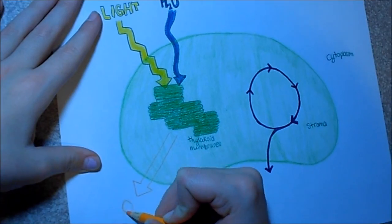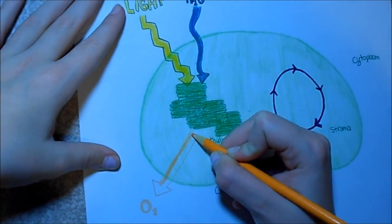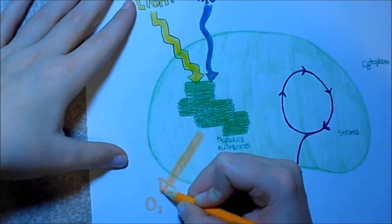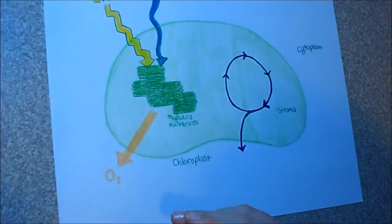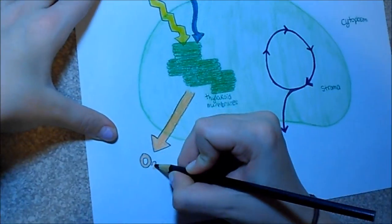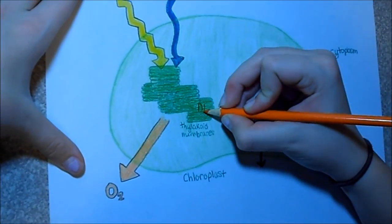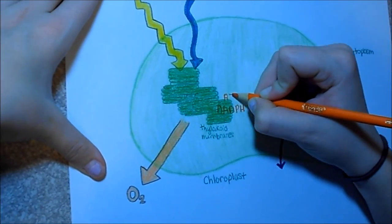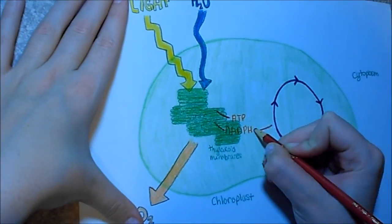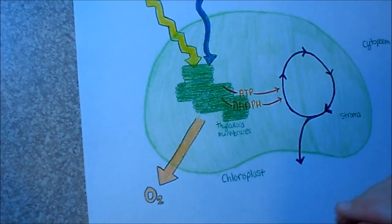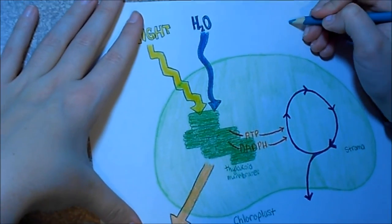Two oxygen molecules from the H2O molecules bond together to make oxygen gas, which is O2, which exits the chloroplast and goes out into the cell. NADPH and ATP exit the thylakoid membranes and go out into the stroma. The process in the thylakoid membranes is the light-dependent reaction.